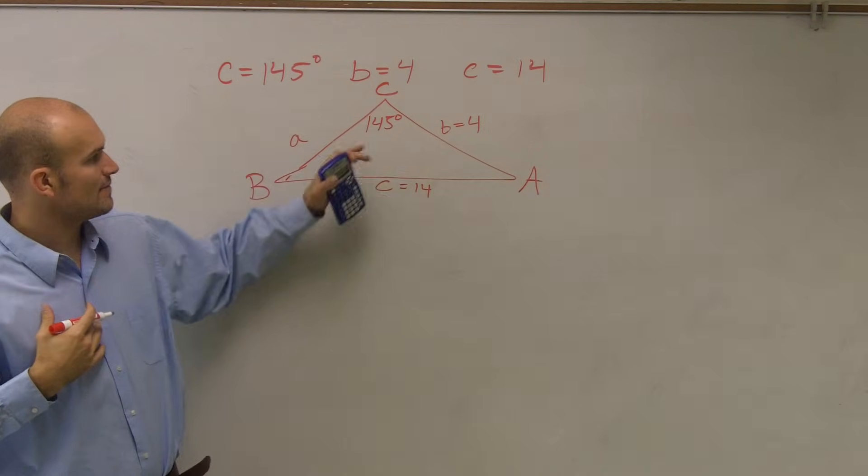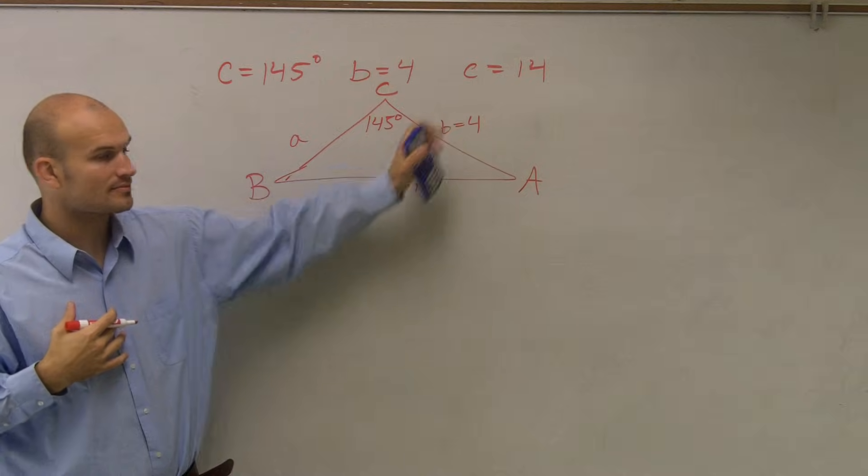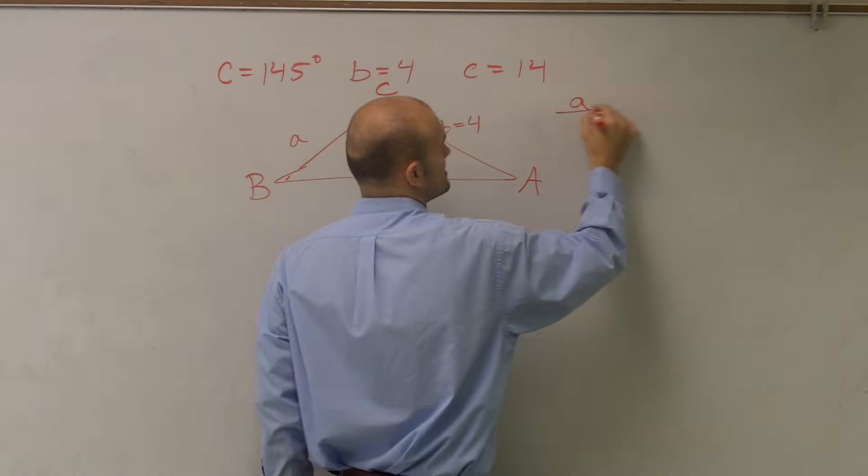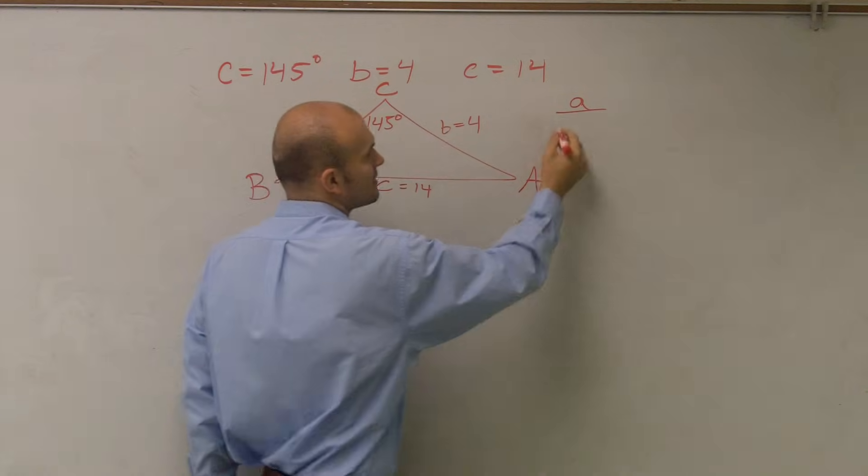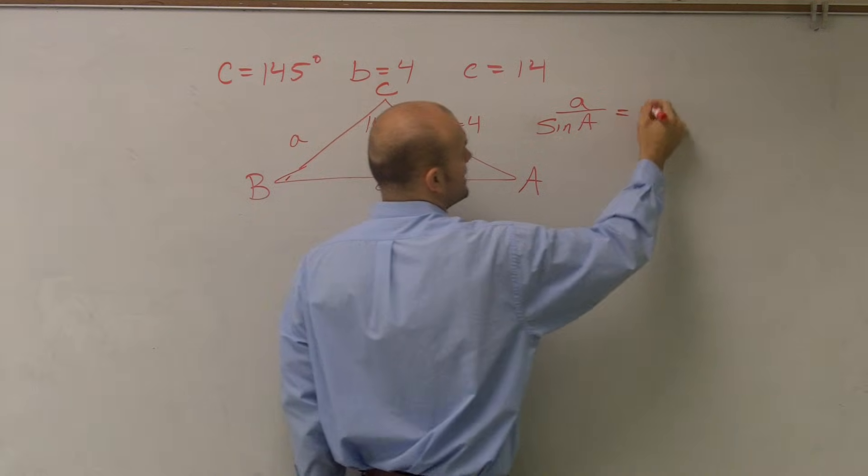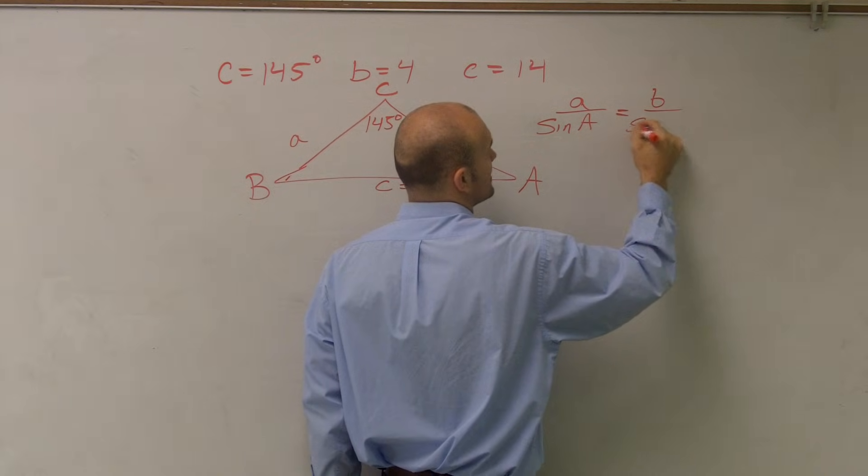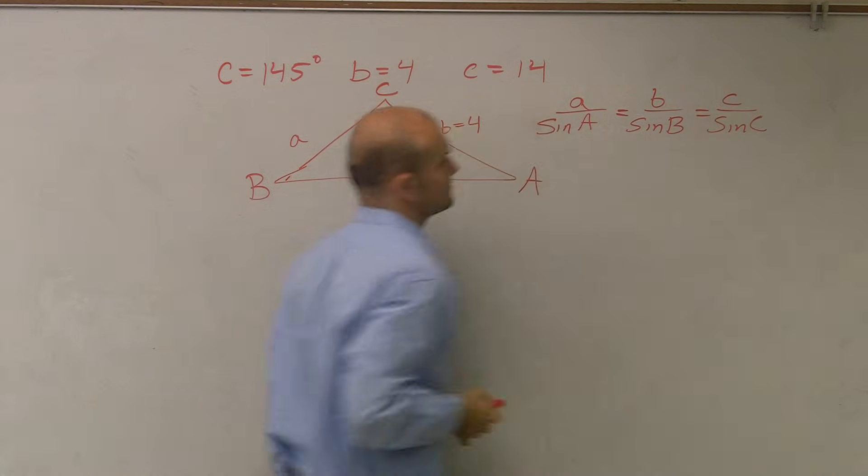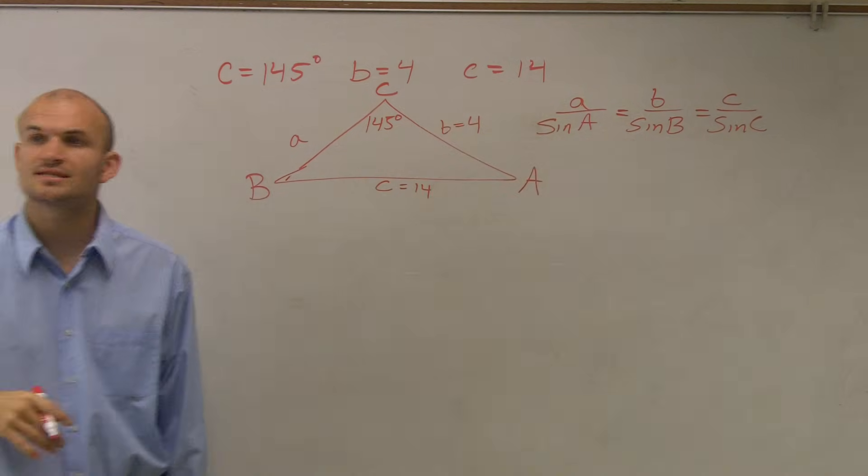So again, like I said, whenever I'm given two side lengths and I have an opposing angle, I can use the Law of Sines. Remember the Law of Sines states that the length of a side over sine of A is proportionally equal to another side length of a triangle, b over sine of B equals c over sine of C. So that's what the Law of Sines states.